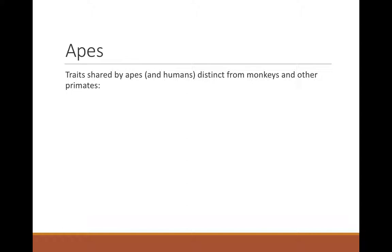Some traits shared by apes and humans that distinguish them from monkeys include body size. Monkeys are on average dog- or cat-sized; marmosets and tamarins weigh at most about a pound. Apes are comparable to human body sizes: chimpanzees are 150–200 pounds; female gorillas about 150, males about 400; female orangutans about 150, males upwards of 500 pounds. So considerably larger body size.